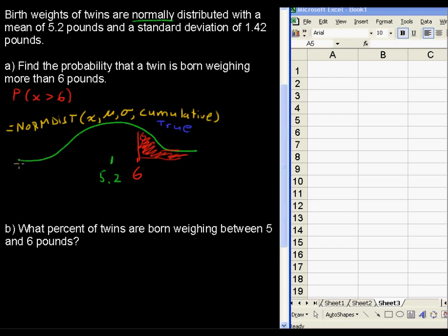The way Excel works is when it is asking whether or not you want it to be cumulative, and you say yes, it always, always, always gives you this area to the left of the number that you put in.